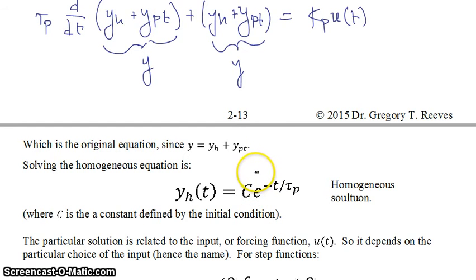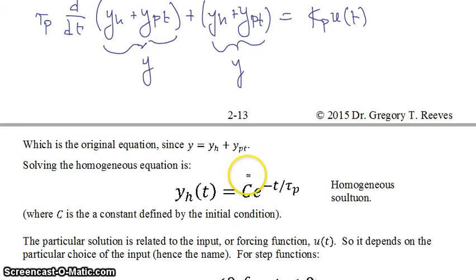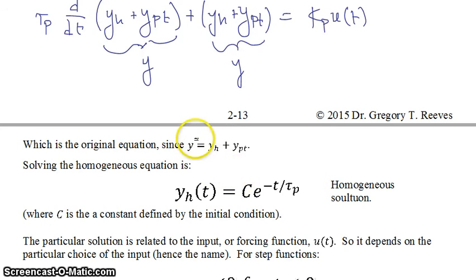After a handful of tau p's, your transient has died away, and henceforth your particular solution will completely define what's going on in your process.